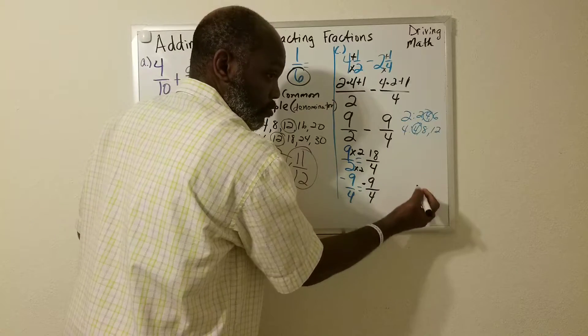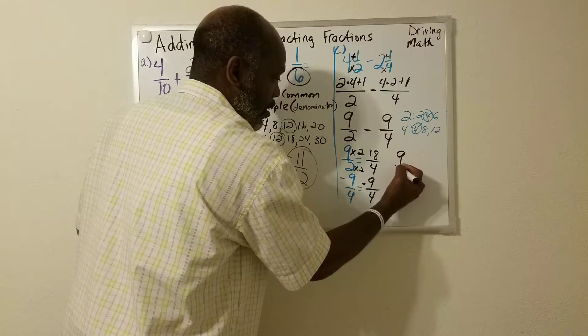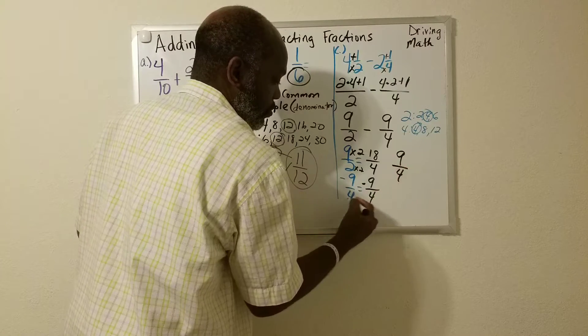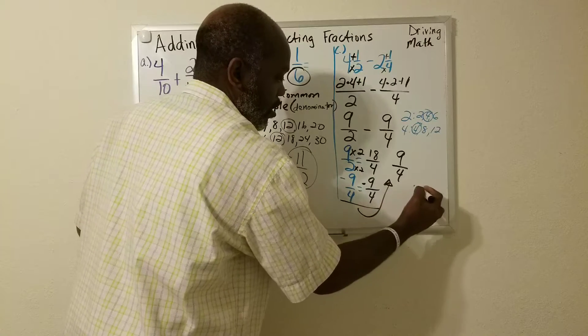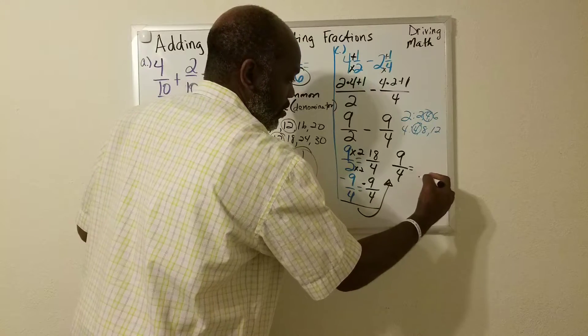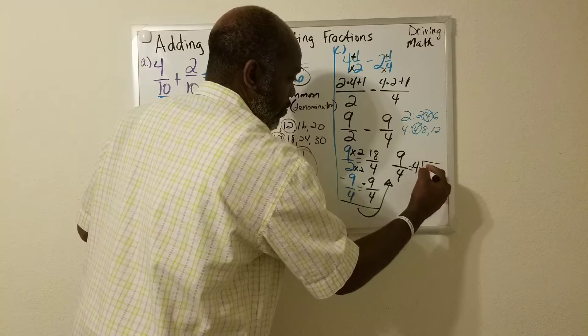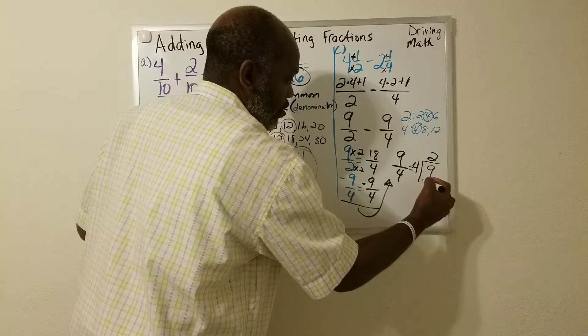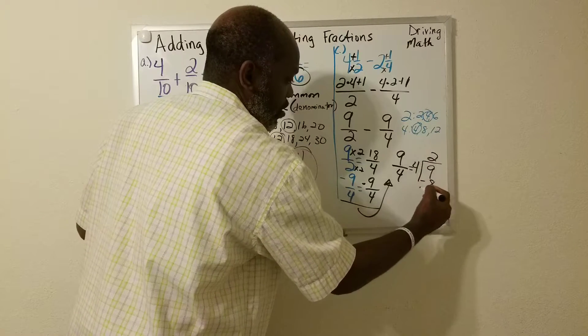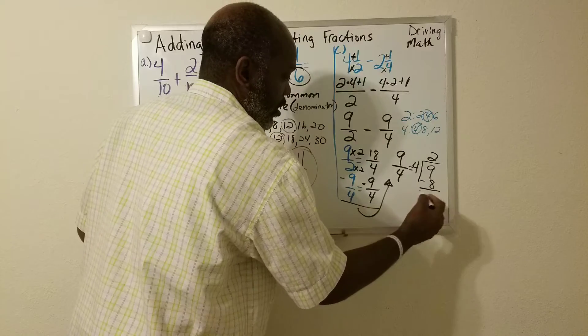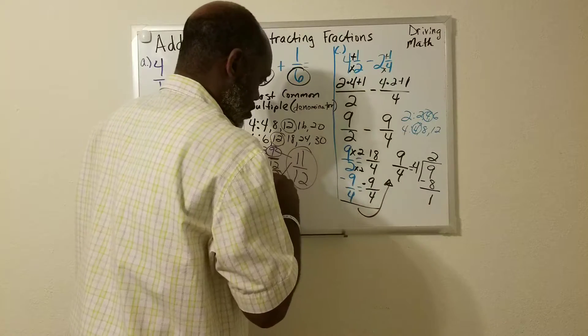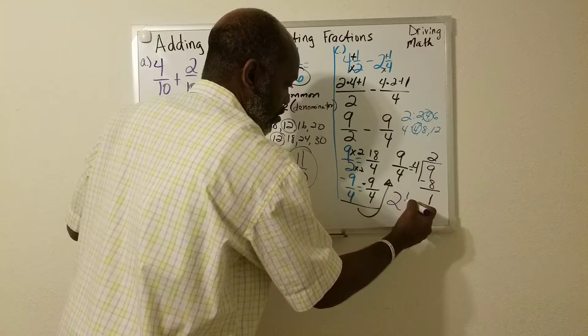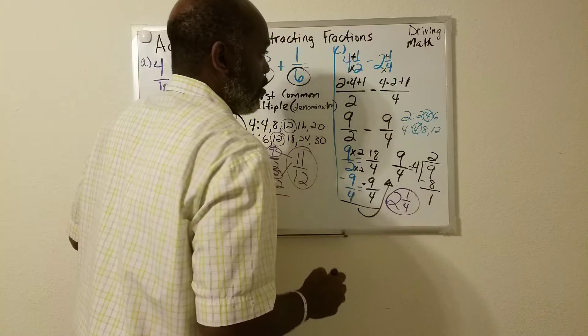18 minus nine is nine. And then we keep the denominator to be four. And we can divide that. Nine divided by four, so four goes in nine two times. Four times two is eight. So we have one left. Our answer is two and one fourth.